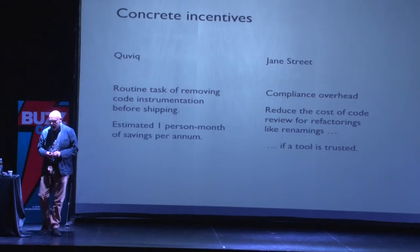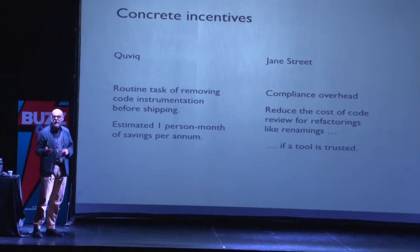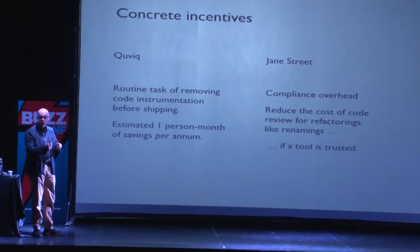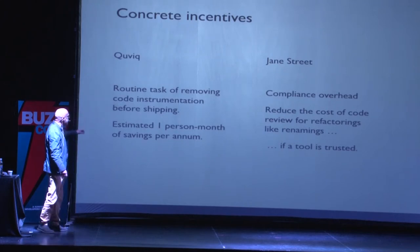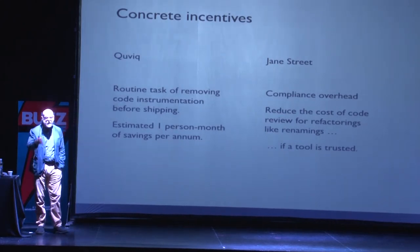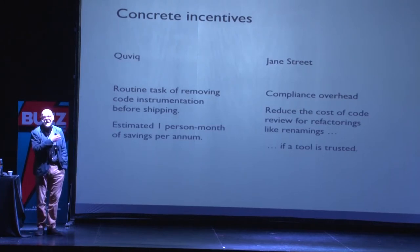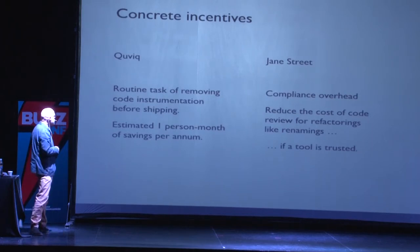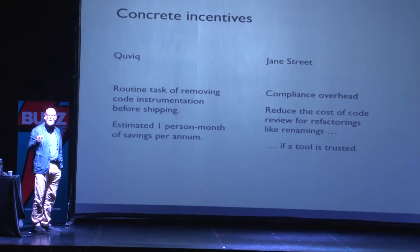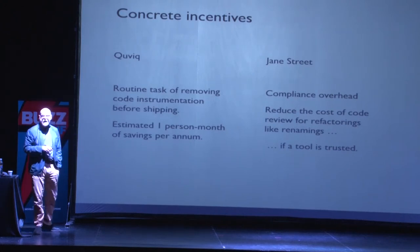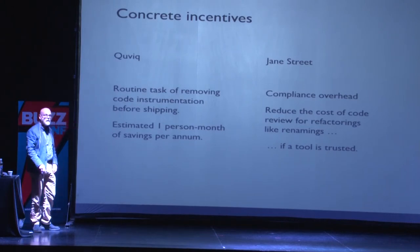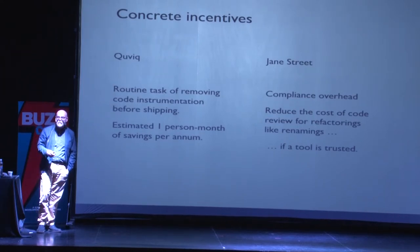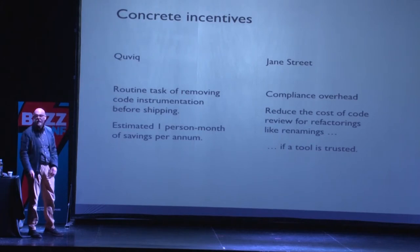We can see two concrete incentives. For Jane Street, if you have a compliance overhead, having a tool that gives you assurance of a correct refactoring means you can reduce the cost of code review. The work we did with QVIC — they had a routine task of removing instrumentation before shipping code. They didn't just want to switch it off with a macro; they wanted to remove it completely. We worked with them using the DSL we produced, and they reckoned they were saving a person-month of work per year because of that. So there can be concrete incentives for using these things.